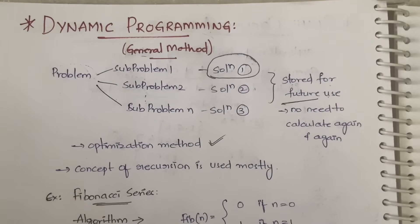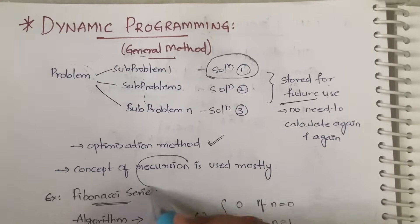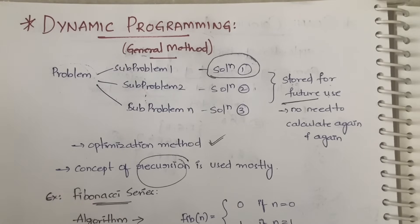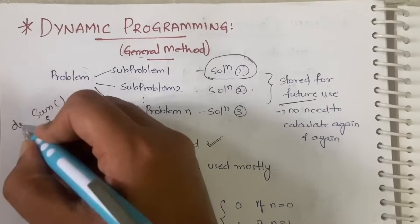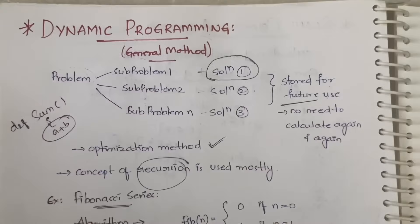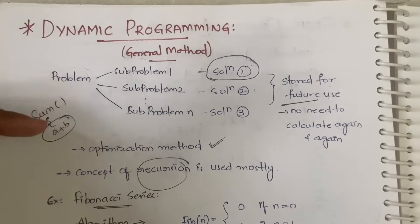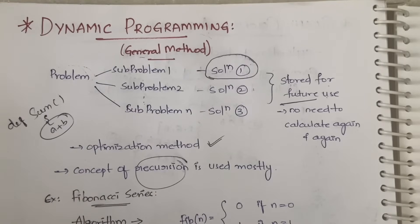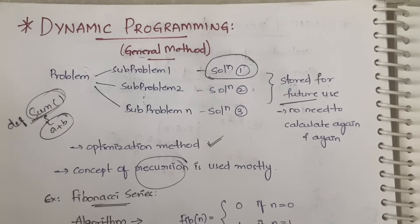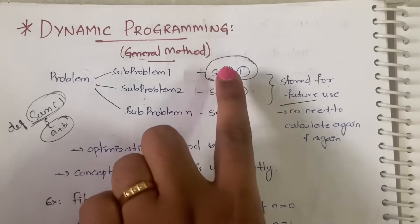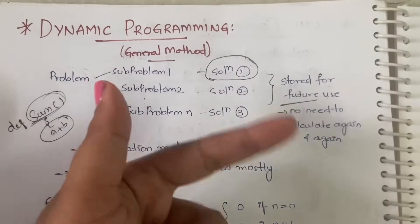In dynamic programming, in most applications we use the concept of recursion. You define a single function once, and whenever you want it you can directly call it. For example, suppose you define a function 'sum' that adds two numbers — next time you call 'sum' you need not redefine all those steps; you just call the function and it is done. Similarly here, you find the solution once but repeatedly use those solutions.